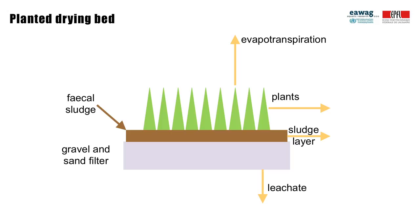The plant roots also function to help keep the bed from clogging and provide a more complex environment for the growth of bacteria within the bed. Planted drying beds are also operated in continuous mode, not as a batch, so sludge is continually loaded onto the beds, but only removed after a period of years.